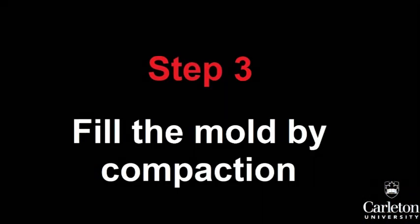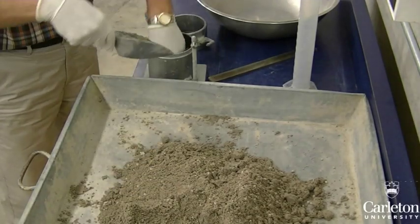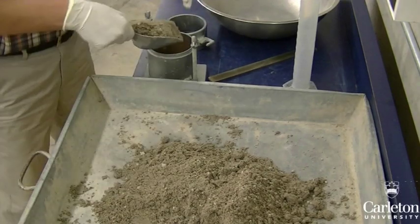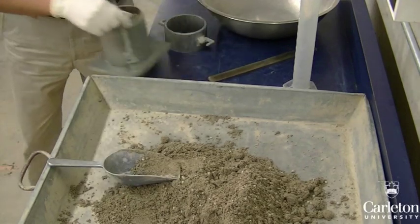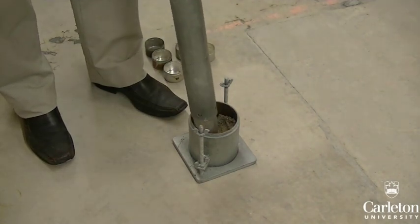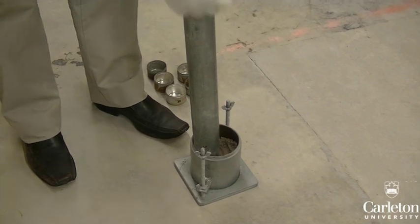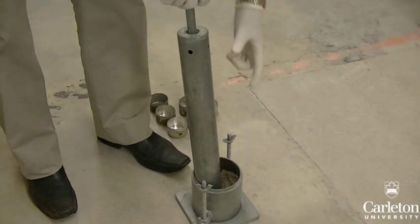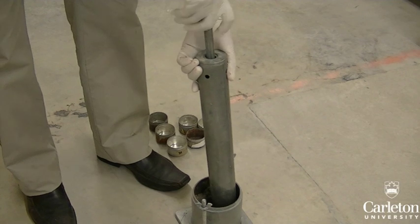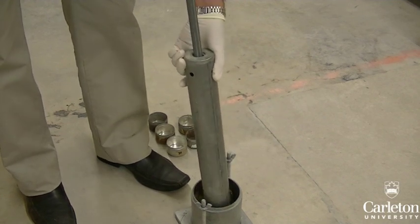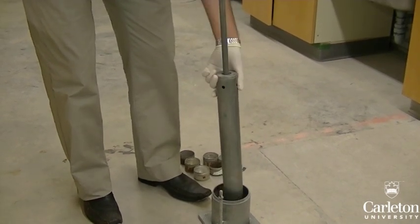Now we can fill the mold with our sample. For the standard Proctor test, the objective is to compact 3 layers of soil within the space of the test mold. For the first layer, fill the mold about half of the way up. To ensure a standard amount of applied compaction energy, we will be using the 5.5 pound hammer to compact the soil. Place the hammer in the mold, lift the handle to its maximum height of 12 inches and drop it. 25 drops are needed to compact this layer of soil. Work your way around the outside of the mold so that the soil layer is compacted evenly.